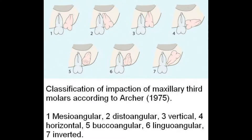Today we are going to talk about the impacted third molar. Maxillary impacted third molars can be of various angulations. In 1975, Archer described a classification of maxillary impacted third molars according to seven types: mesoangular, distoangular, vertical, horizontal, buccoangular, linguoangular, and inverted. In day-to-day practice, we can observe all these different types of impactions with the maxillary third molar.